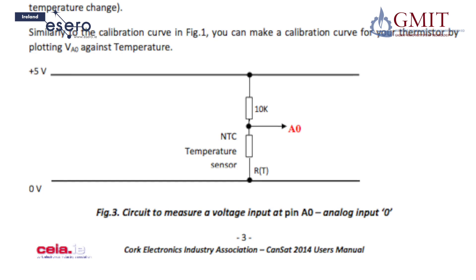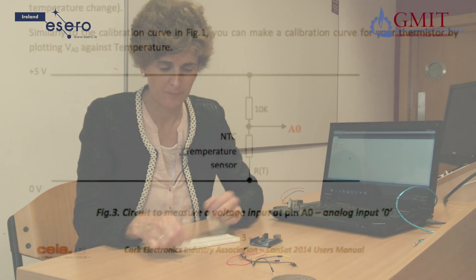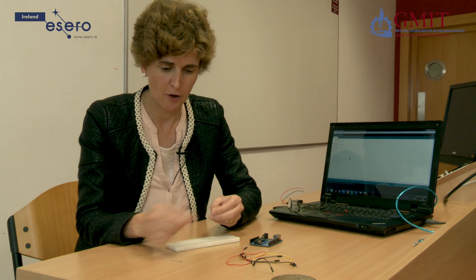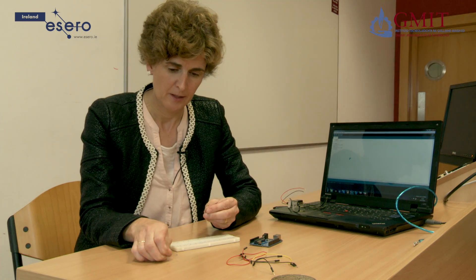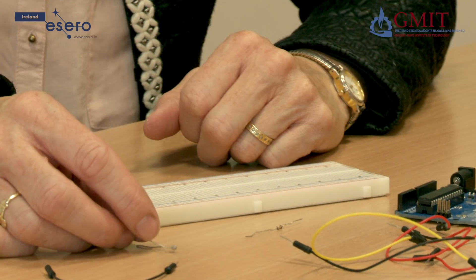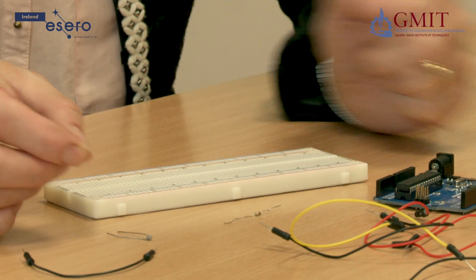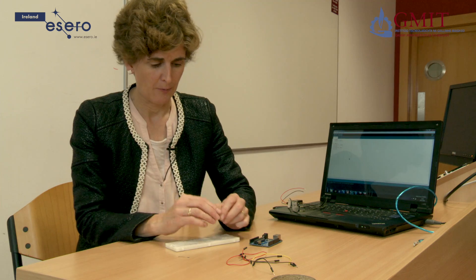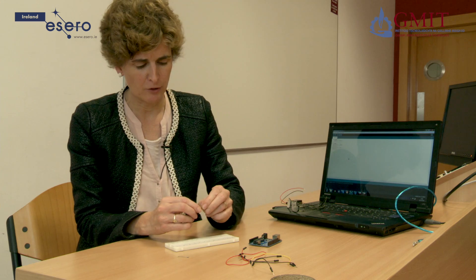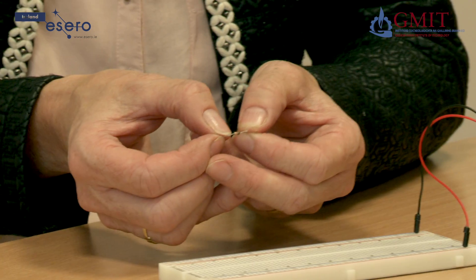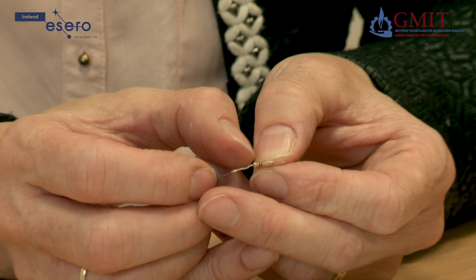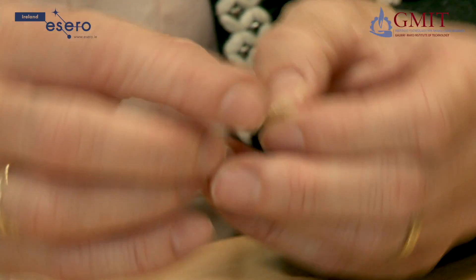To build the circuit, we need a 10K resistor, a thermistor, and some wires and breadboard on the Arduino. The values of resistors are identified by the colour coding bands on them — you'll find more on this on the web or your physics book. This one is brown, black, orange.